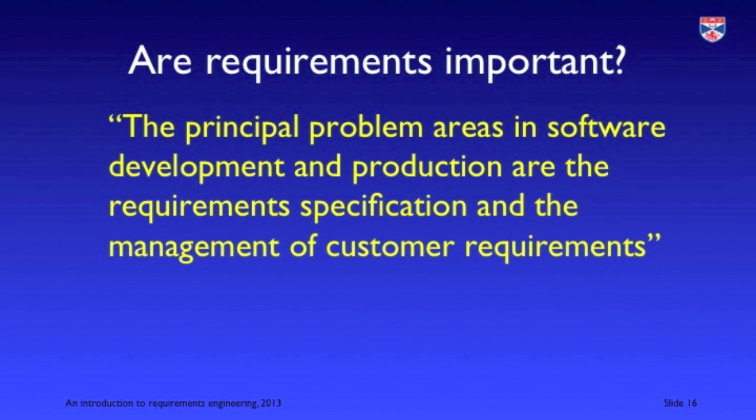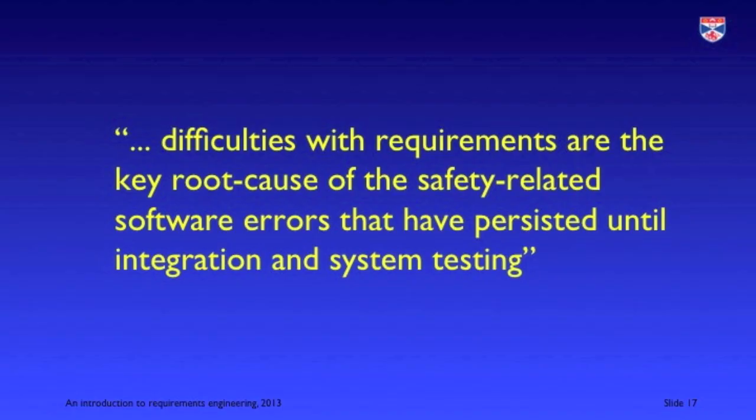Getting the requirements right is arguably the most important activity in the software engineering process. Studies back this up: the European Software Process Initiative found that the principal problem areas in software development are the requirement specification and management of customer requirements. A study in North America found that difficulties with requirements are the key root cause of safety-related software errors persisting until integration and system testing — meaning the requirements of what the system was supposed to do weren't right in the first place.